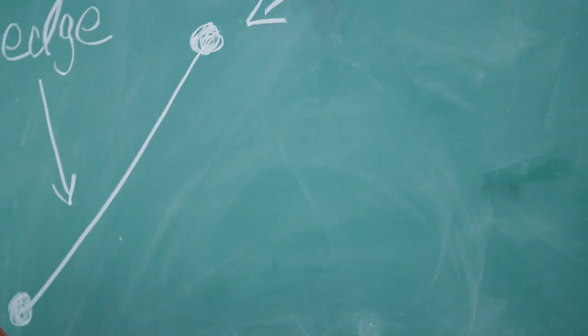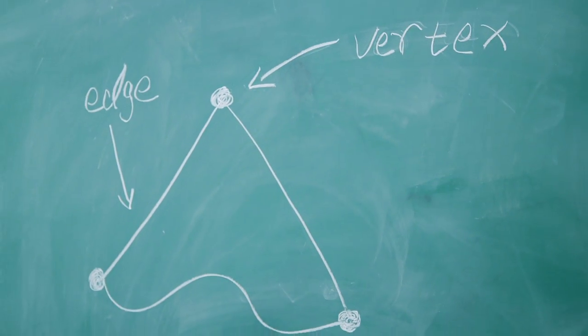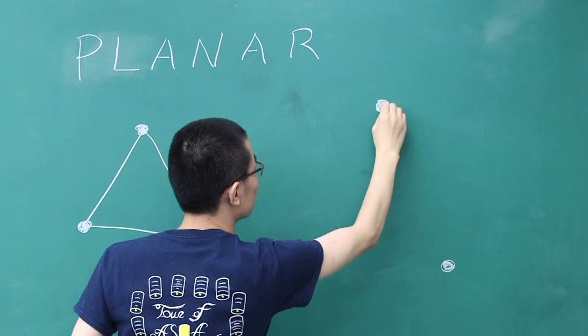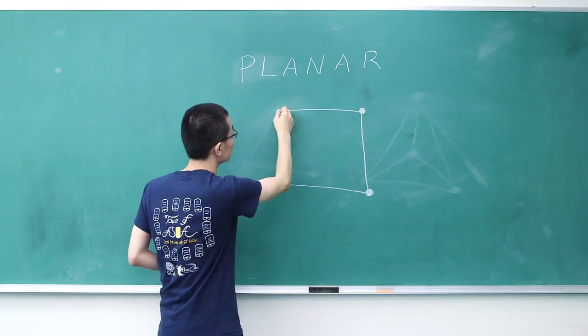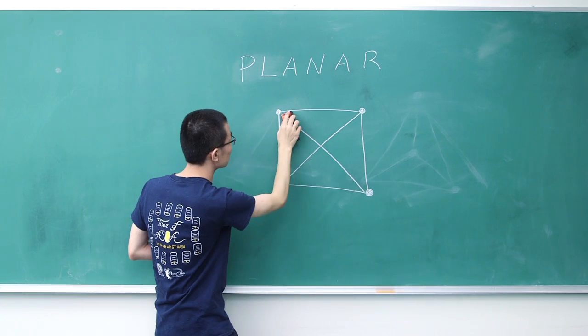And those lines don't even need to be straight, just connected to the points. Graphs that can be drawn in any kind of way so that those stringy lines do not cross each other are called planar. Sometimes that's easy. Sometimes it's more complicated.